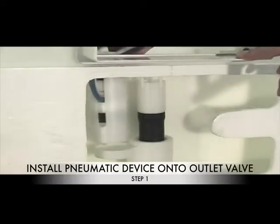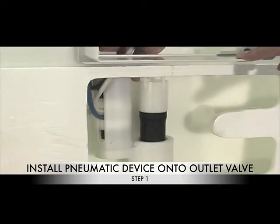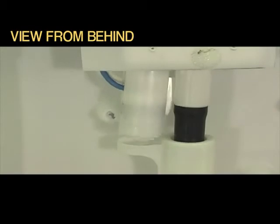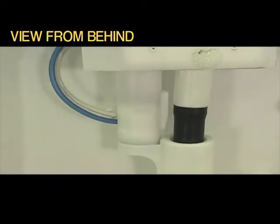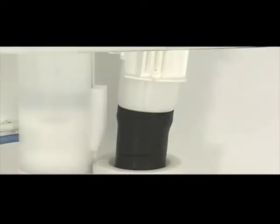Attach the pneumatic device to the outlet valve by a quarter turn. Slide the half flush lever onto the outlet valve.